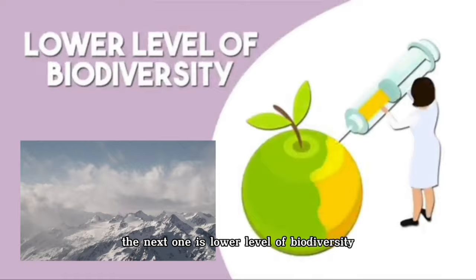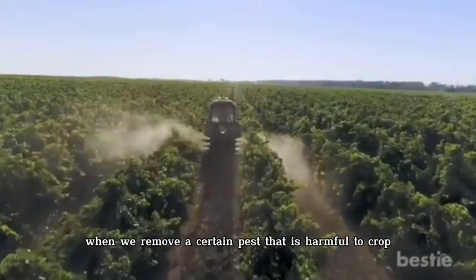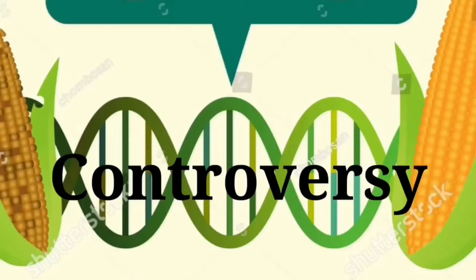The next disadvantage is a lower level of biodiversity. One potential drawback of this technology is that some organisms in the ecosystem could be harmed, which in turn could lead to a lower level of biodiversity. When we remove a certain pest that is harmful to crops, we could also be removing a food source for a certain species. In addition, genetically modified crops could prove toxic to some organisms, which can reduce their numbers or have them go extinct.